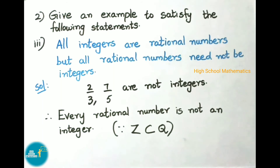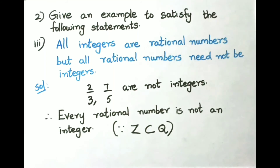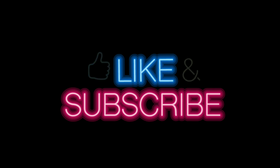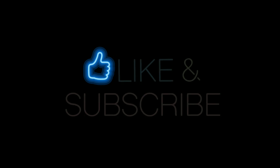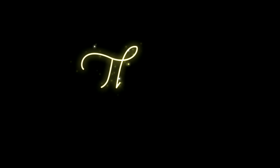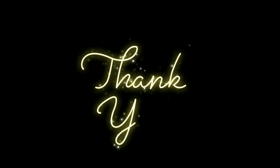We can say every rational number is not necessarily an integer. Today we have seen class 8 chapter 1 on rational numbers — what rational numbers are, and the 'do this' and 'try these' exercises. Hope you all liked this video. If you liked it, please like, share it with your friends, and subscribe to our channel. Thank you for watching. See you next time. Bye!